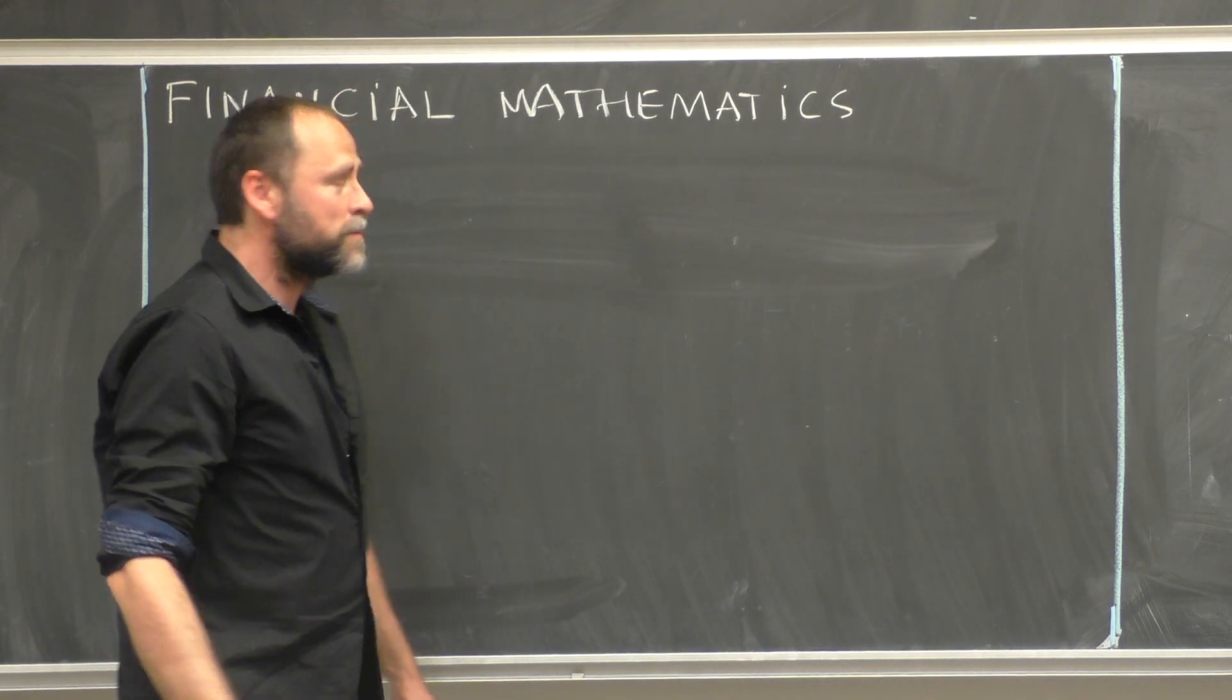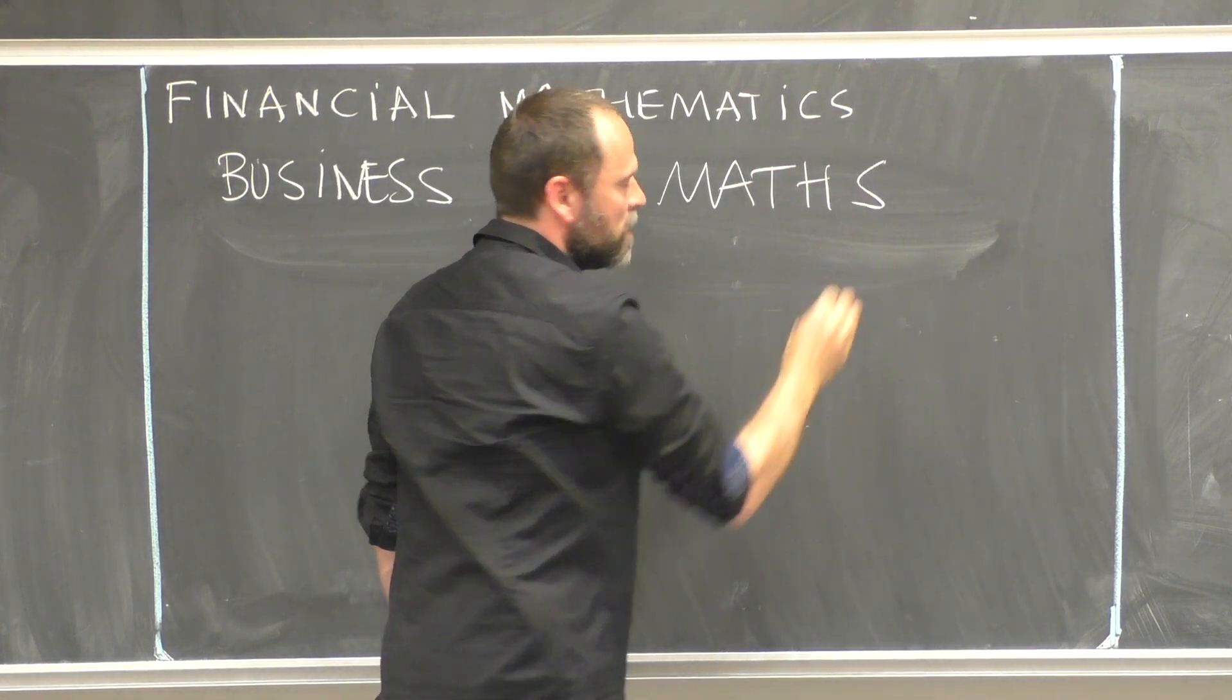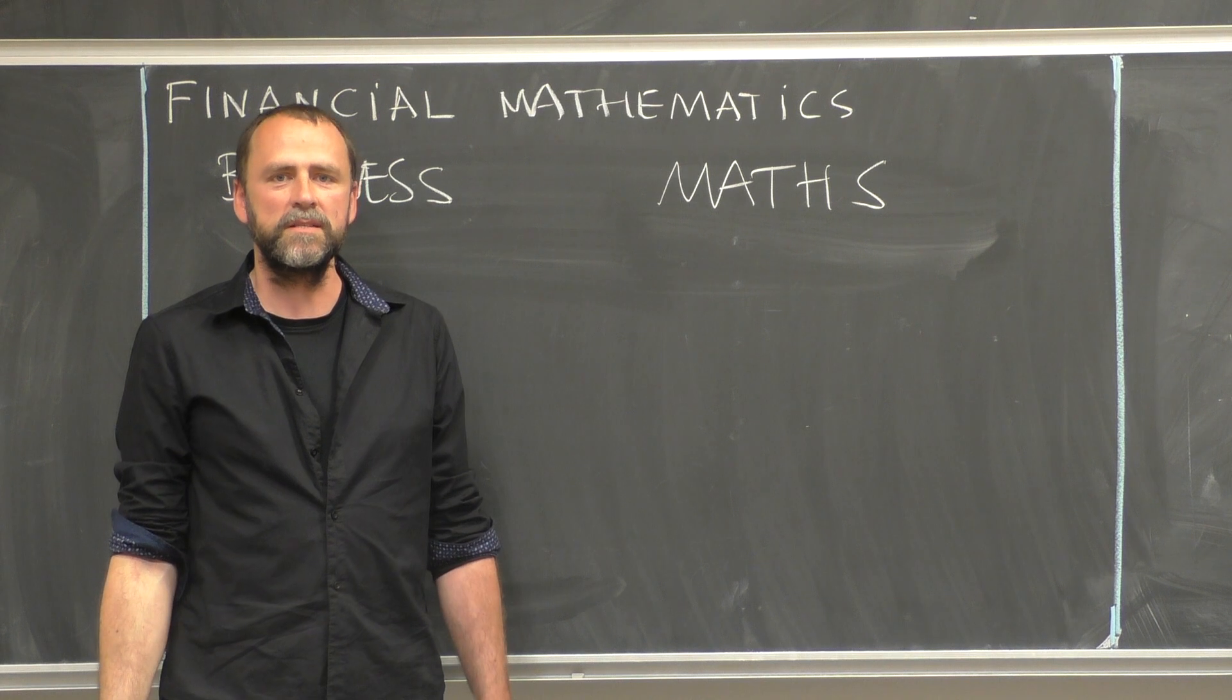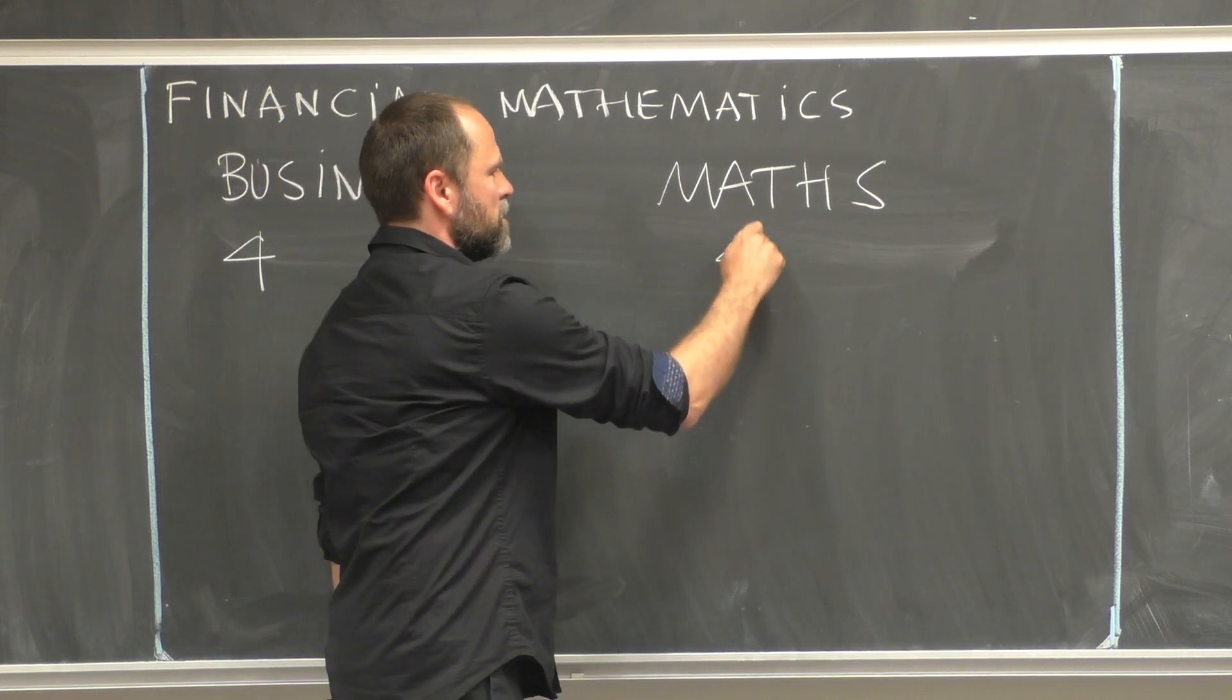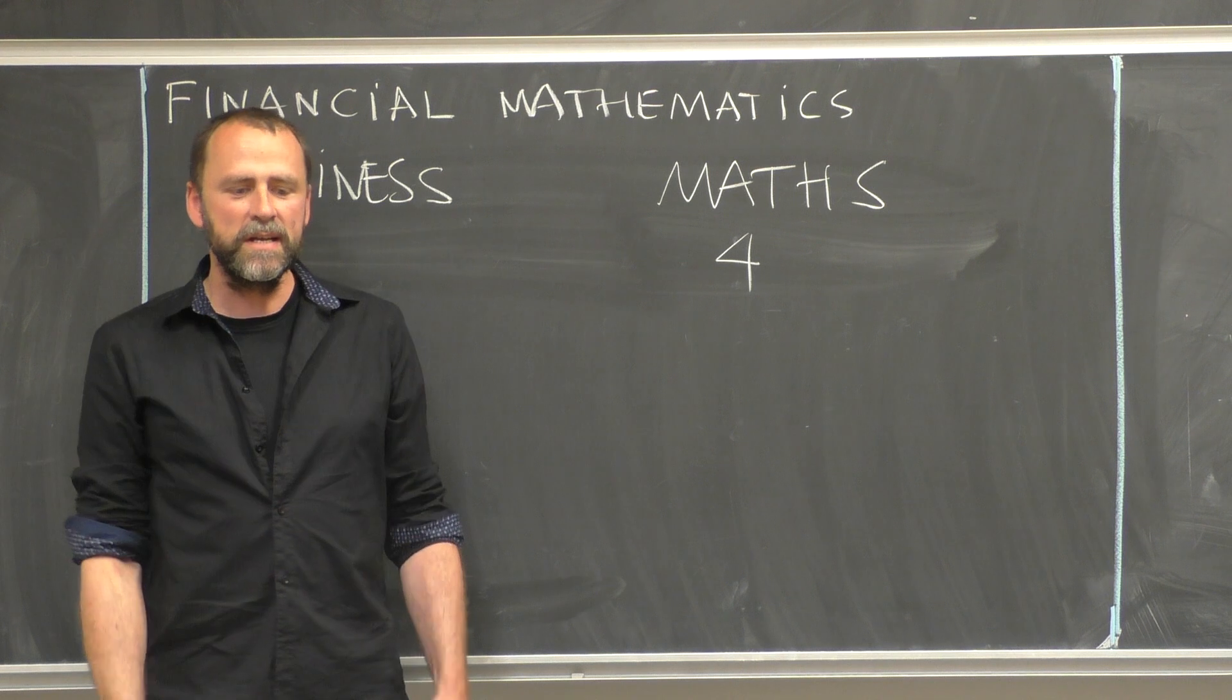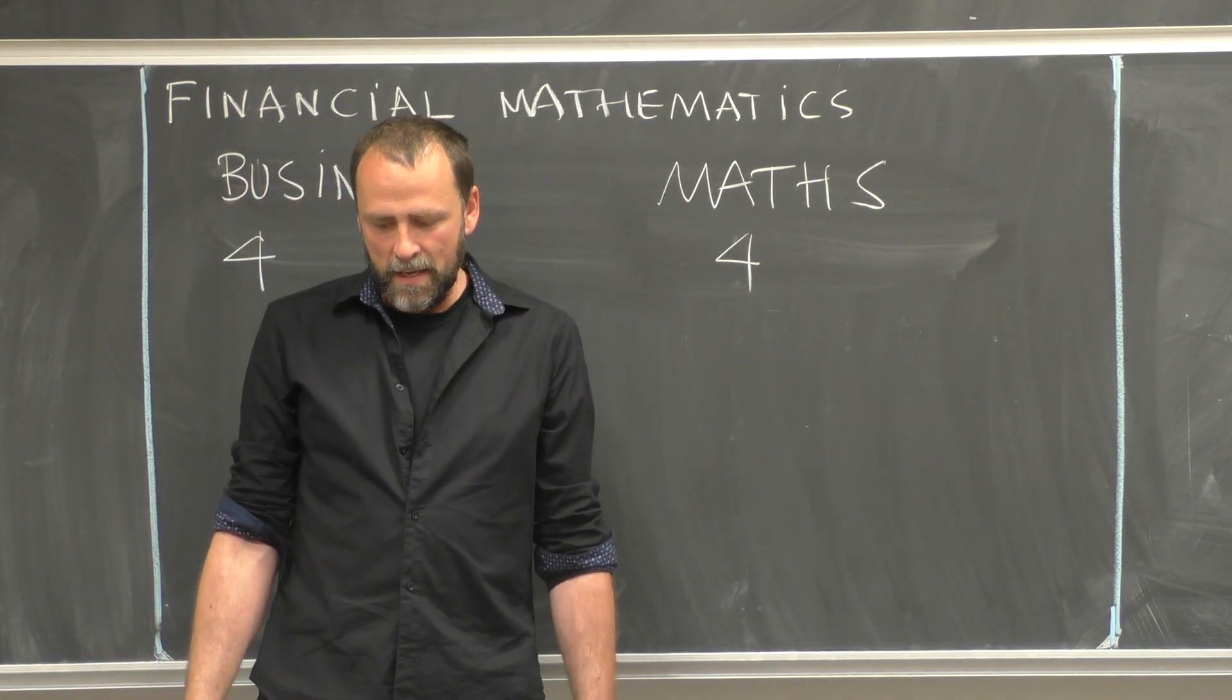This program is split 50-50 between the Business School and Mathematics. There are four courses provided by the Business School when they try to present a more practical side of Financial Mathematics, and four courses provided by us, the Maths Department, where we try to tell you what's really inside the bonnet of this Financial Mathematics program and what kind of mathematics is used there and why it fails.